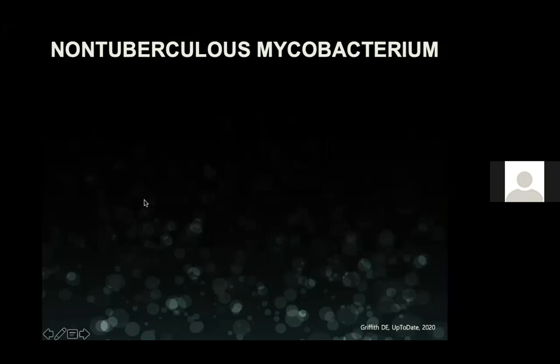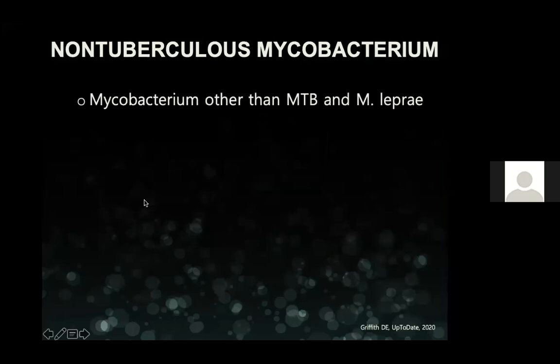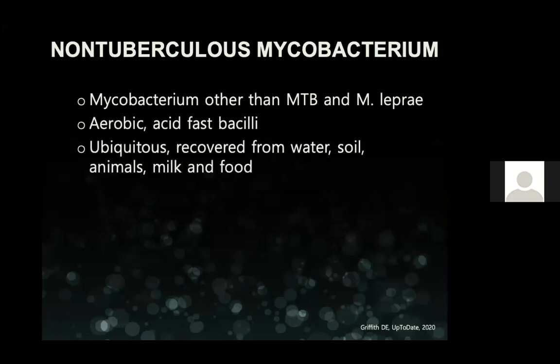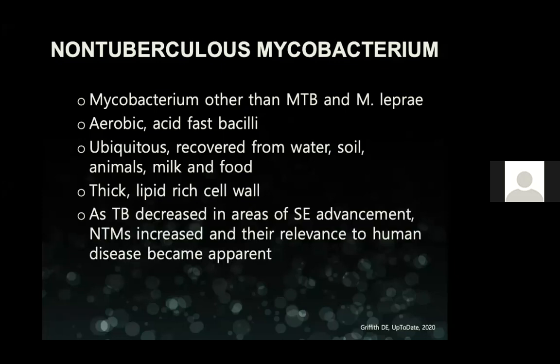Non-tuberculous mycobacteria are mycobacteria other than TB and leprosy. They're aerobic acid-fast bacilli. They are ubiquitous — recovered from water, soil, animals, milk, and food. They have a thick lipid-rich cell wall, which means they can withstand extremes of heat and pH. As TB is decreasing in areas of socioeconomic advancement, NTMs are increasing, and their relevance to human disease is becoming more apparent.